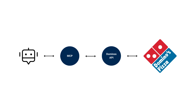So with MCP, here's how it worked in my pizza example. I simply asked my AI agent on my local machine to order some pizza from Domino's. The AI agent looks and says, 'Do I have an MCP server for Domino's to order pizza?' It finds it, and that MCP server — running locally on my own machine — understands how to interact with the Domino's pizza API, allowing me to programmatically order my pizza.